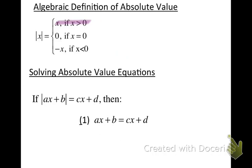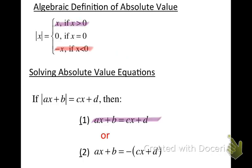The second case is where this value could actually be negative. We're going to assume that the quantity inside the absolute value bars could be negative. And if it's negative, then this value and the other side are opposites of one another. That assumption leads us to this: if the quantity ax plus b is negative, then it is the opposite of what was on the other side — the opposite of cx plus d. So Case 2 gives us ax plus b equals the opposite of cx plus d.